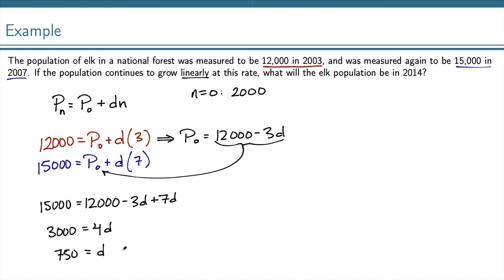Now that I know D, I can take that and plug it back in up here to get P0. P0 equals 12,000 minus 3 times 750. Now I can simplify. 3 times 750 is 2,250. Subtracting those, we get 9,750.